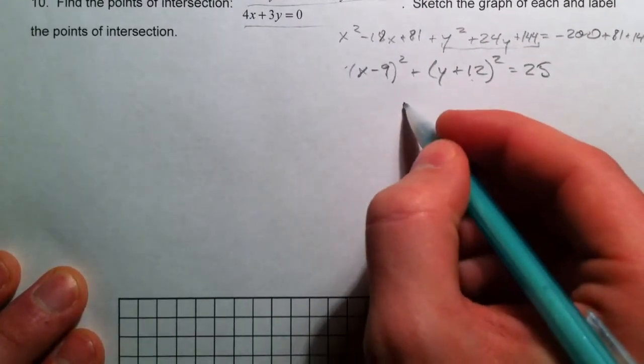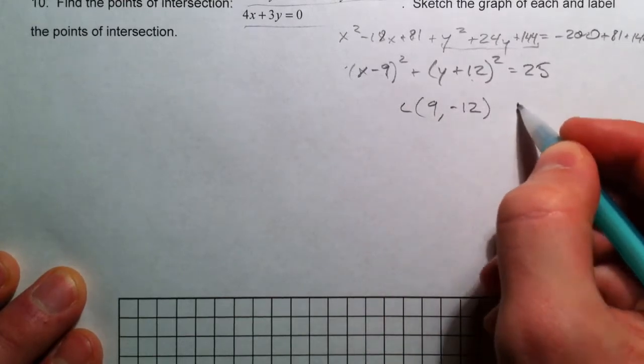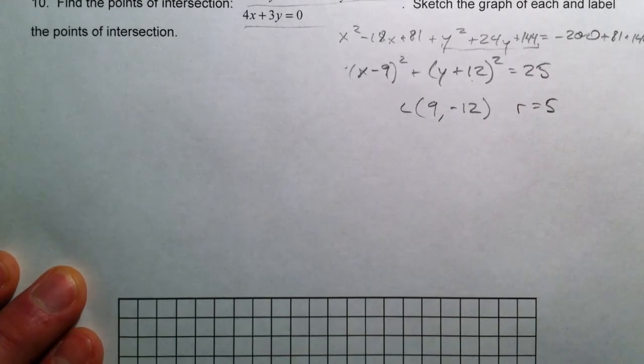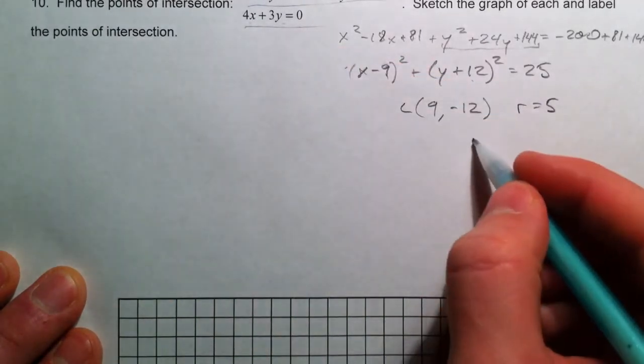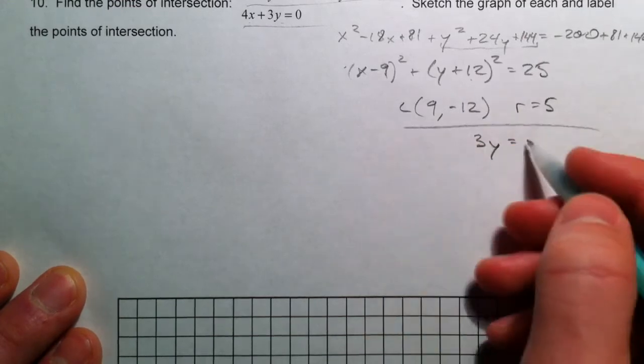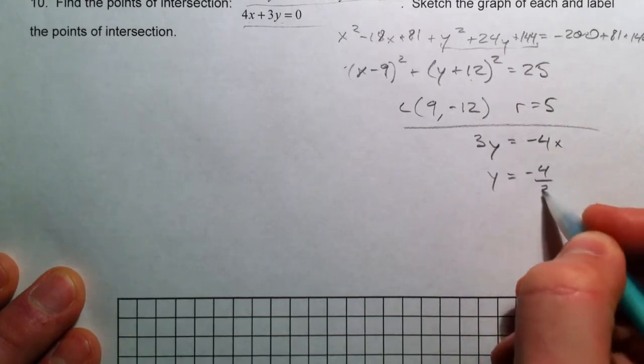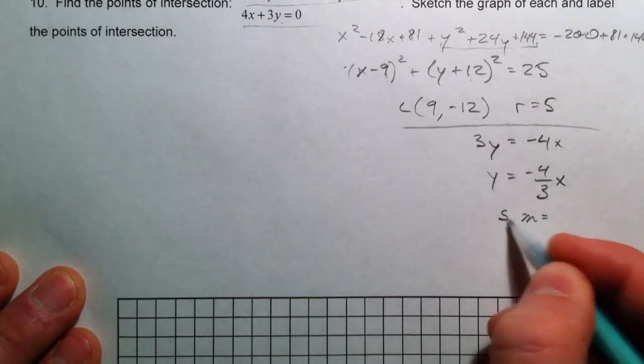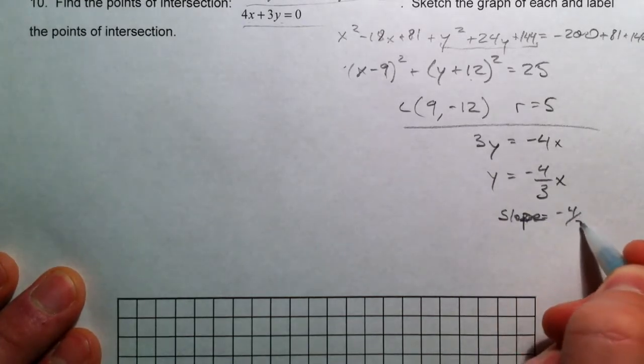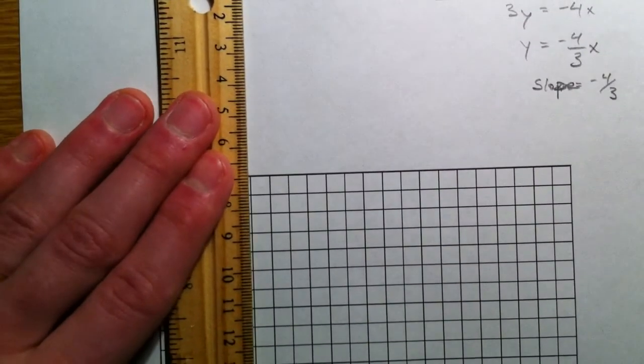So, we have a circle centered at 9, negative 12 with a radius of 5. And then, this right here, 4x plus 3y equals 0 is just a line. And so, I'm going to say 3y equals negative 4x. So, y equals negative 4 thirds x. So, it's a line with a slope of negative 4 thirds.